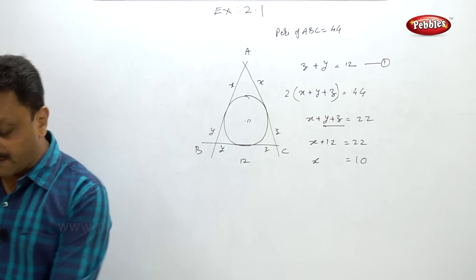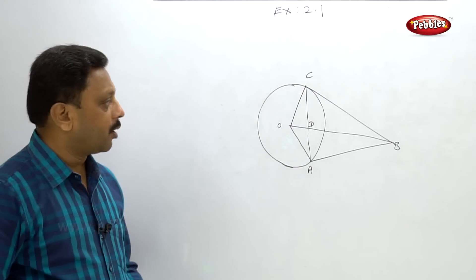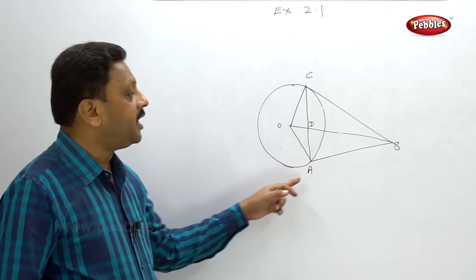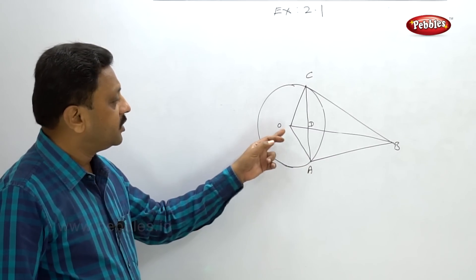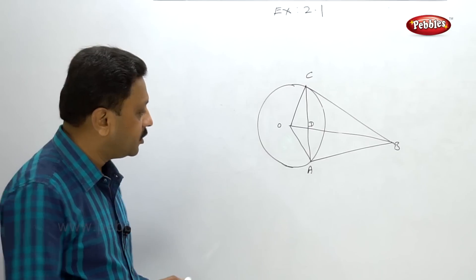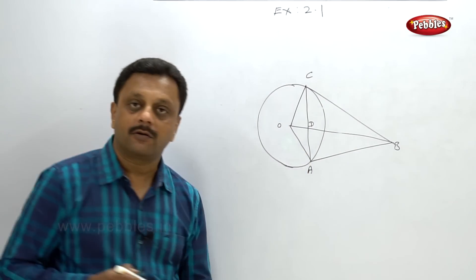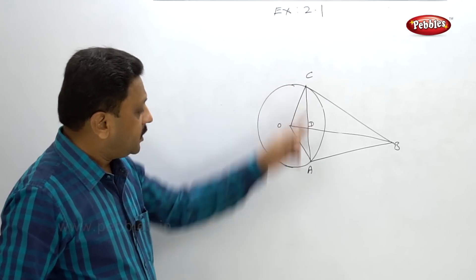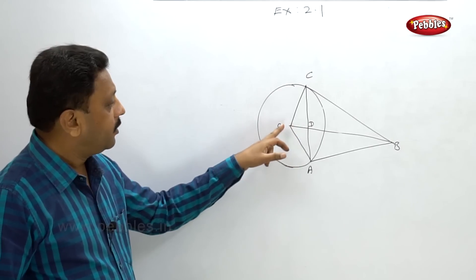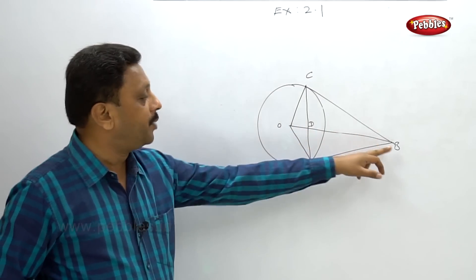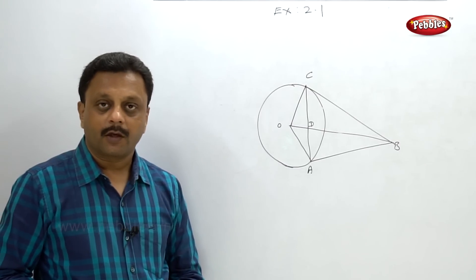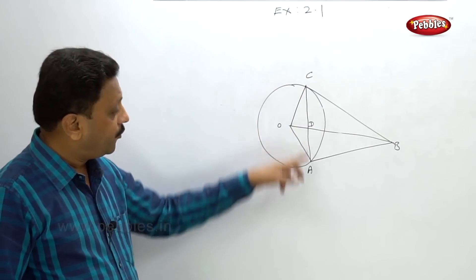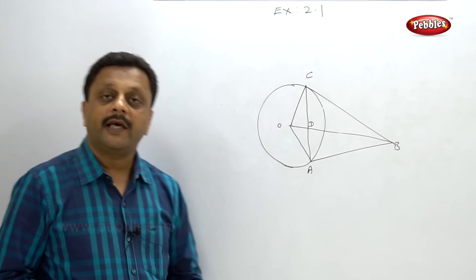Problem number 11: BC and BA are both tangents to the circle with center O. Chord DCA is a chord, and point D is the intersection of OB and AC. We have to prove that OB is a perpendicular bisector of chord AC.